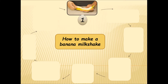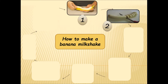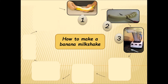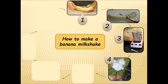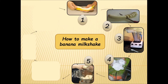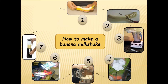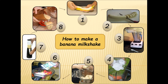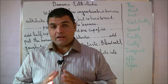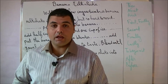If you want to make a banana milkshake, first we have to peel the banana and then we slice it. Then we add a cup of milk into the blender, we also add some ice, and then we add our banana slices into the blender. We can also add yogurt, and then we blend it. Finally, we serve our banana milkshake in a cup and enjoy it.